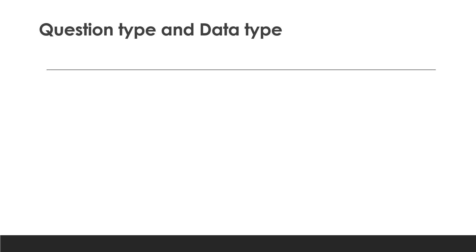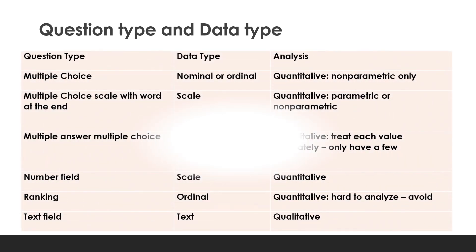For question types and data types: we have multiple choice, multiple choice scale with a word at the end, multiple answer, multiple choice number field, ranking, and text field. For multiple choice, the data type is nominal or ordinal, and the analysis is quantitative and non-parametric. For multiple choice scale with a word at the end, it is parametric or non-parametric.